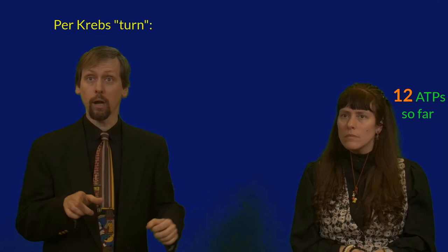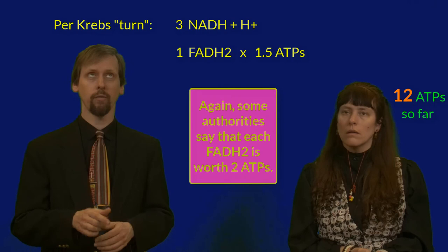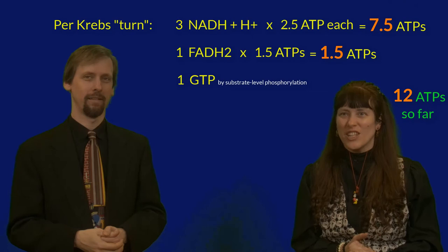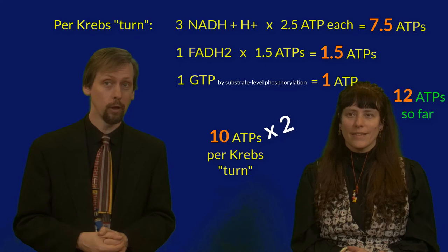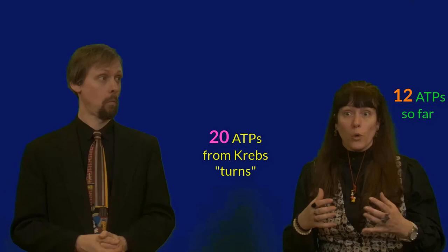When we make a turn around the Krebs cycle, we get three more NADH plus H pluses and one FADH2. The FADH2 is worth one and a half ATPs in the electron transport chain. So that's three times 2.5 is 7.5 ATPs, plus the 1.5, giving us nine ATPs. Don't forget GTP, made by substrate-level phosphorylation — so that makes 10 ATPs total from a Krebs turn. And two acetyl-CoAs enter the Krebs cycle per glucose, so that's 20. Add in the 12 from before, and we end up with a grand total of 32 ATPs per glucose molecule.